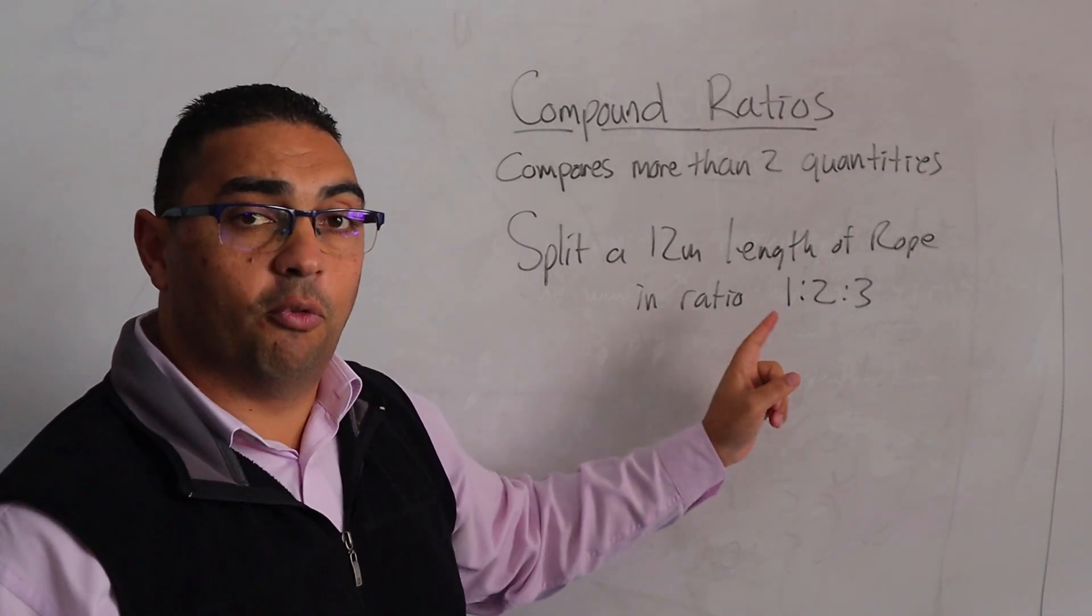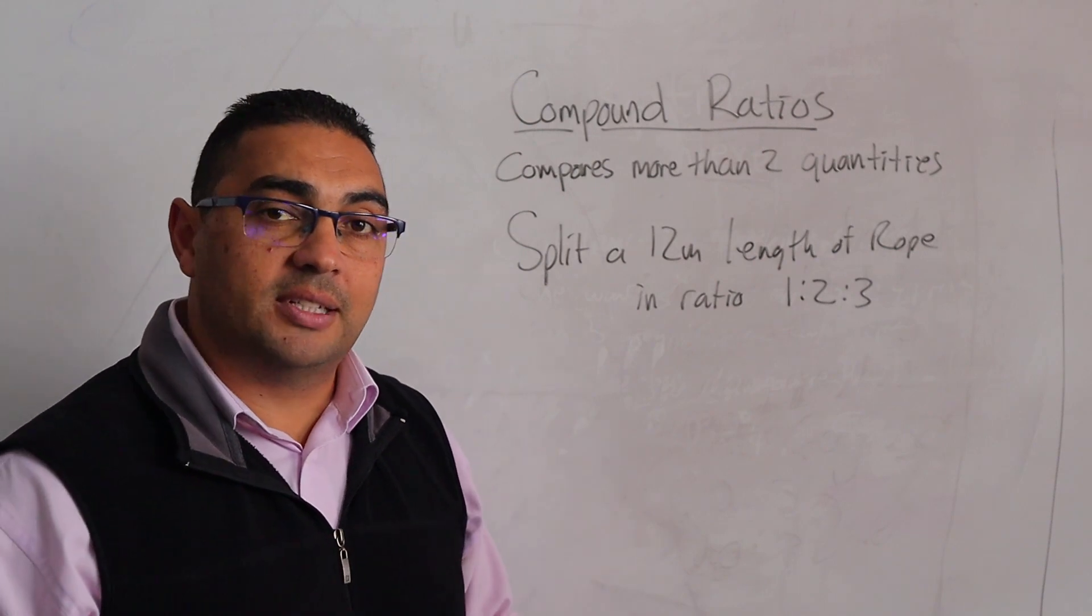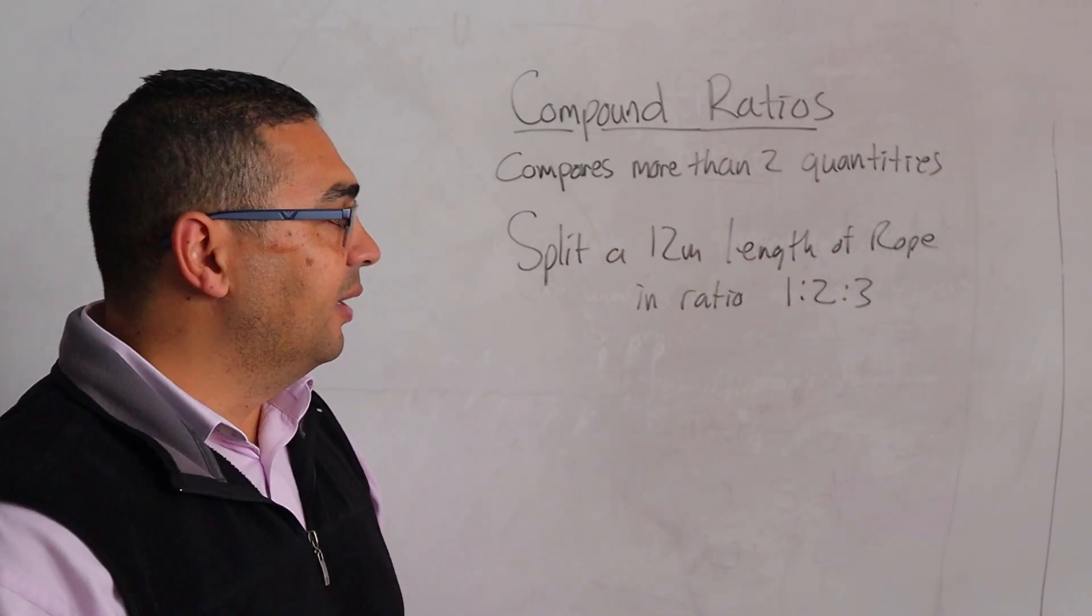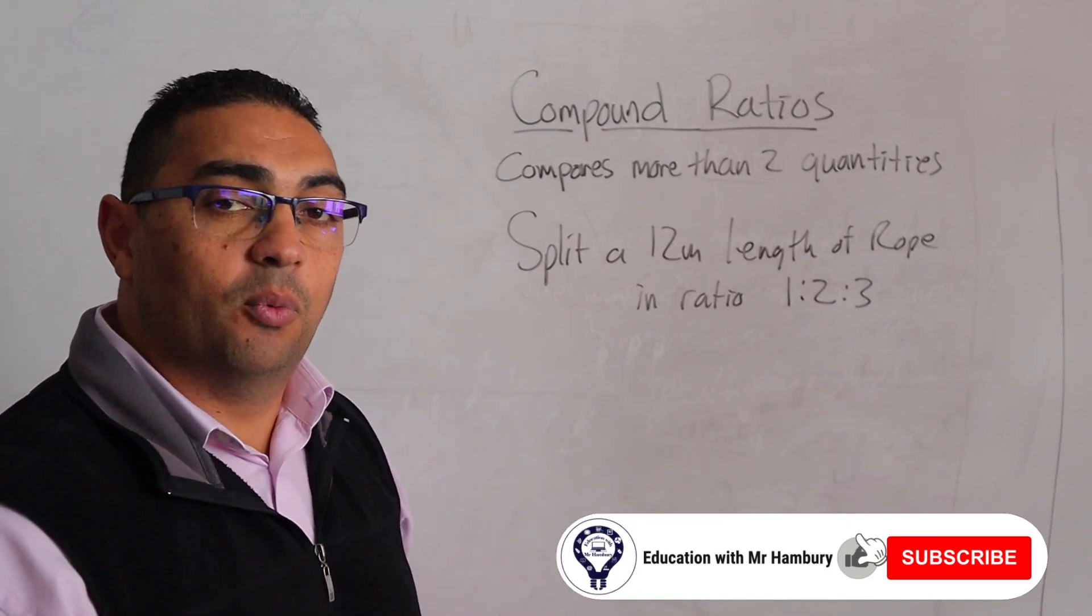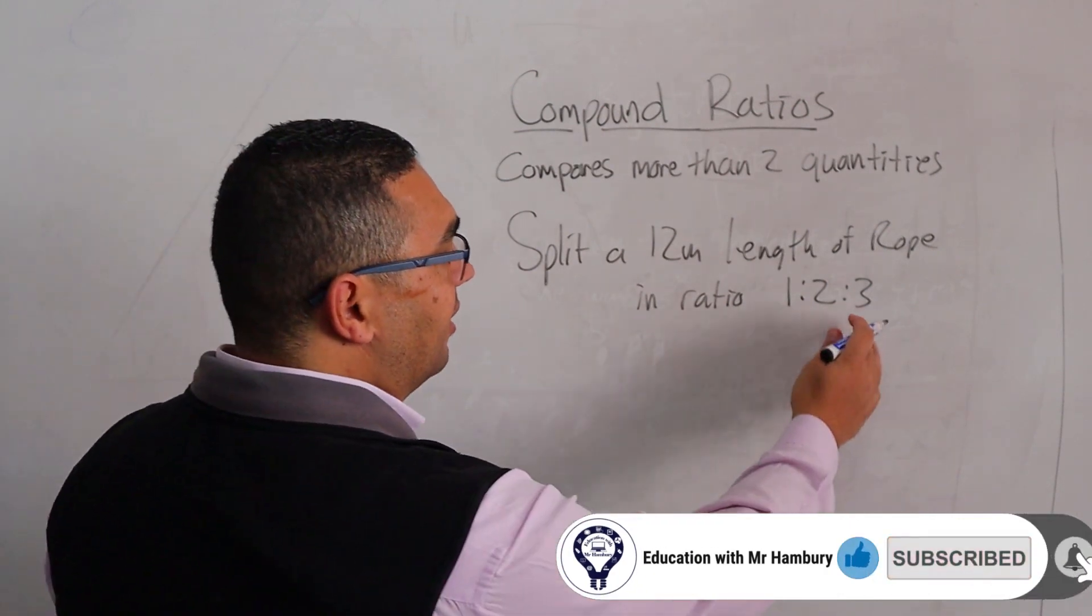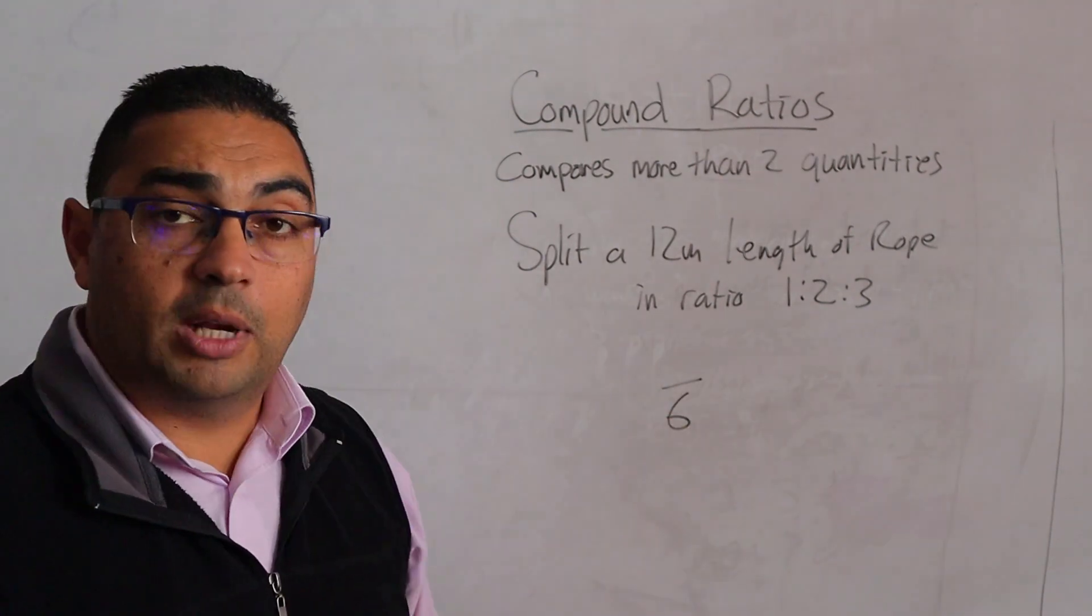Now, what did I say in the very first example? In fact, in the previous video I mentioned that when we add all of these, we end up with a denominator. In this case, 3 + 2 + 1, we're going to end up with a denominator of 6.